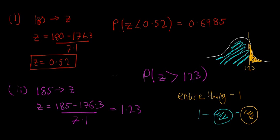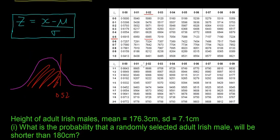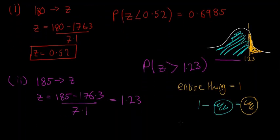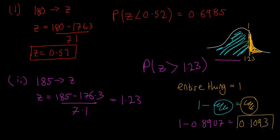Going to the table, we find P(Z < 1.23): go to 1.2 and across to 3, giving 0.8907. Then 1 minus 0.8907 gives us 0.1093. So the probability that someone will be taller than 185 centimetres is 0.1093.